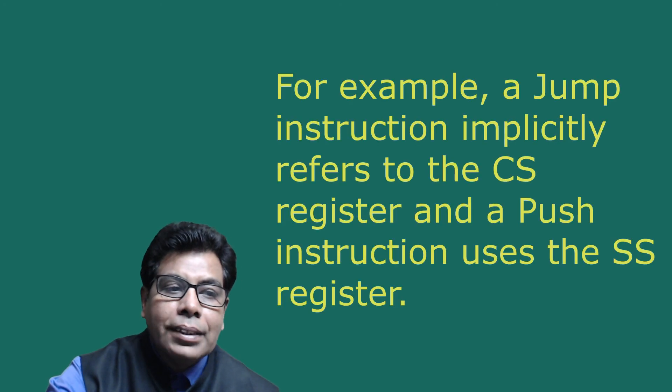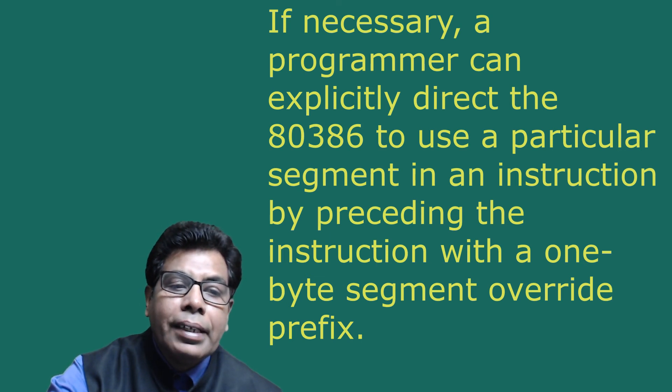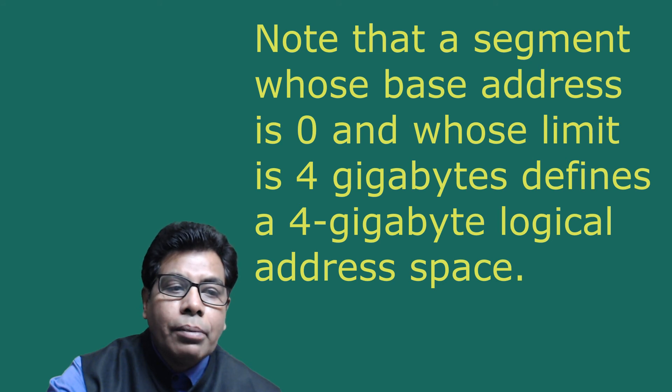To improve instruction encoding efficiency, most instructions do not name a segment register. Instead, the 80386 automatically selects a segment register based on the instruction being executed. For example, a jump instruction implicitly refers to the CS (code segment) register, and a push instruction uses the stack segment register. If necessary, a programmer can explicitly direct the 80386 to use a particular segment in an instruction by preceding the instruction with a 1-byte segment override prefix. The prefix directs the processor to use the particular segment register to translate the address in the following instruction. Note that a segment whose base address is 0 and whose limit is 4GB defines a 4GB logical address space. Because the processor selects segment registers automatically, an instruction can name an operand anywhere in this 4GB space with a simple 32-bit offset.